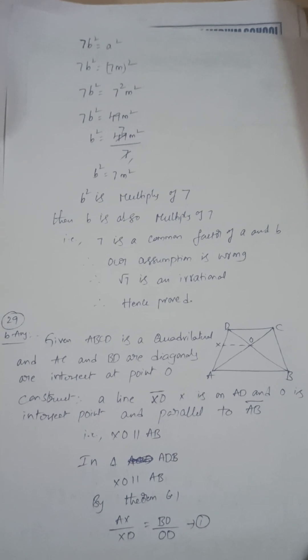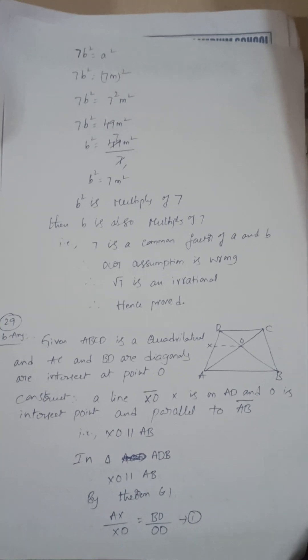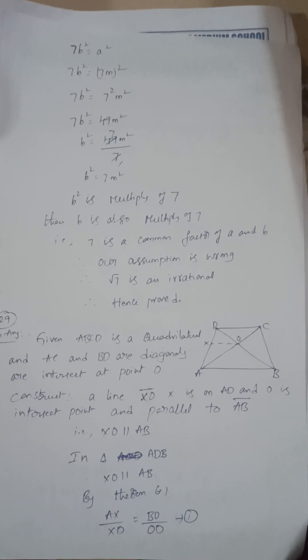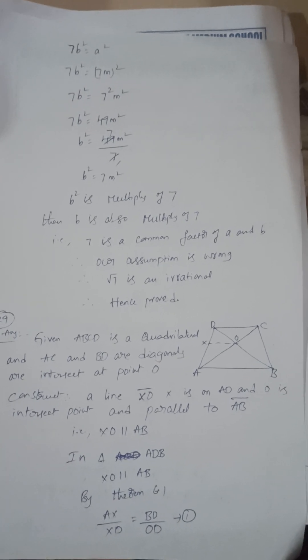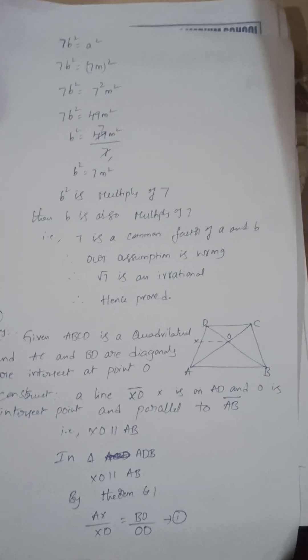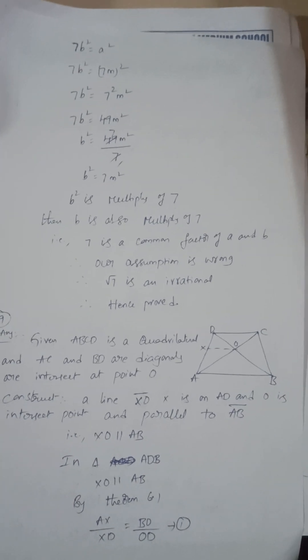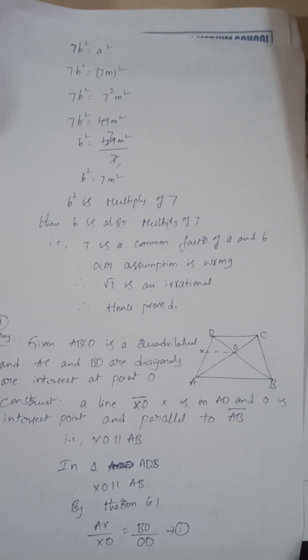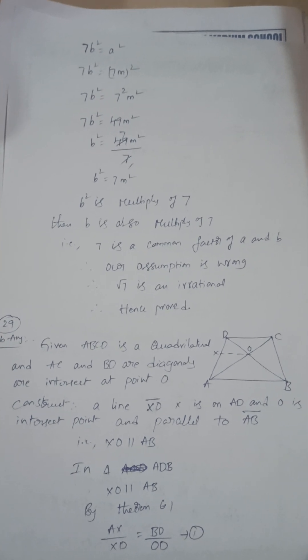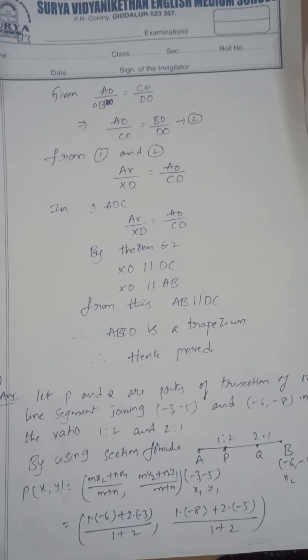29b question: In a quadrilateral, the diagonals intersect at the point O. Then prove that ABCD is a trapezium. You can find by using BPT theorem 6.1, and also you can use the converse of BPT. So XY is parallel to DC, XY is parallel to AB. From this, AB is parallel to DC.